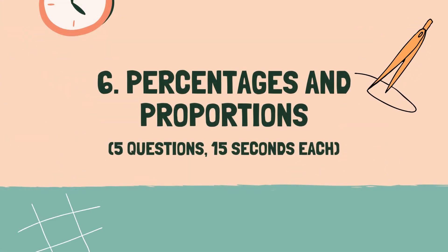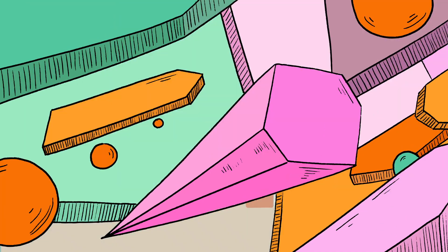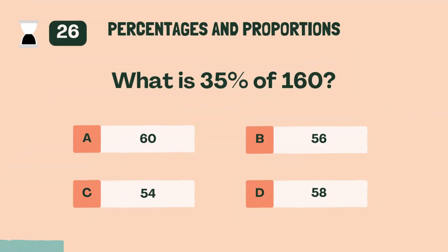Category six. Percentages and proportions. Three, two, one, go. What is 35% of 160?